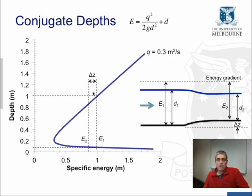As we go over the rise, the specific energy has to decrease by delta Z. Remember, the total energy remains the same, assuming there's no losses. The specific energy is defined relative to the bed, so the specific energy has to decrease by delta Z. That's E₂ minus E₁. So we shift to the left by delta Z, and that means we move down the curve this way. The new depth is something like 0.886 meters.